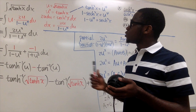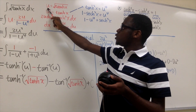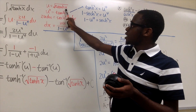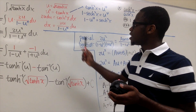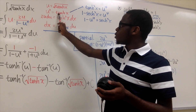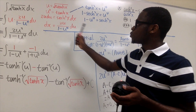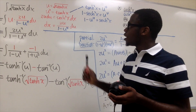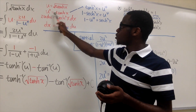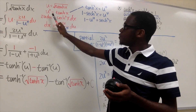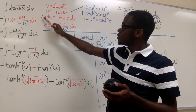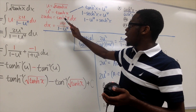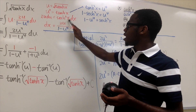The first thing we want to do to solve this problem is to let u equal the square root of hyperbolic tangent x. The next step is to square both sides, which gives us u² = tanh(x). Now we take the derivative of both sides: the derivative of u² is 2u du, and the derivative of tanh(x) is sech²(x) dx.